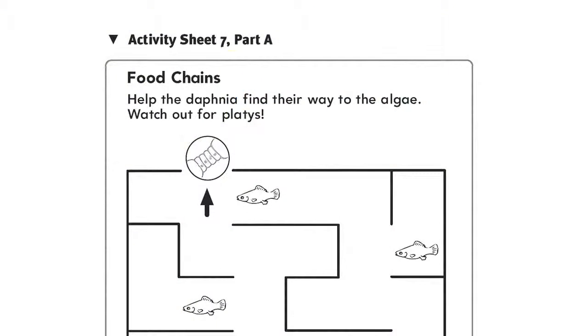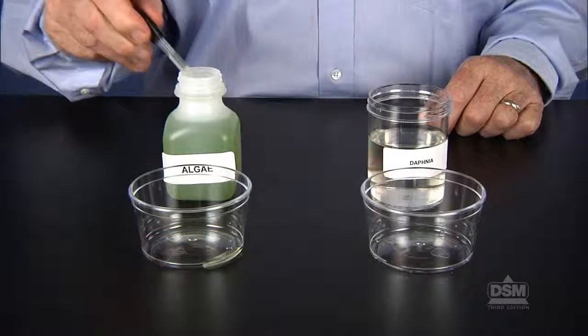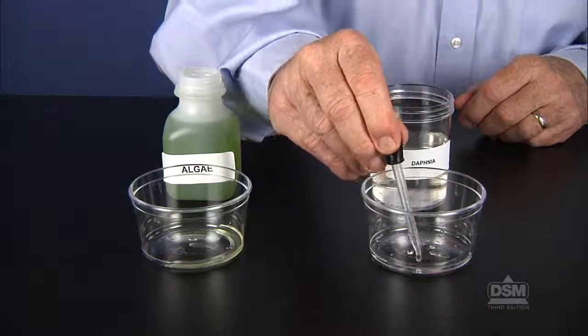Next, divide the class into teams of four. While students retrieve their aquariums, distribute a copy of Activity Sheet 7, Part A, to each student and the materials to each team. Have students place several dropperfuls of algae into one dish and about an inch of water and a dropperful of daphnia into the other.